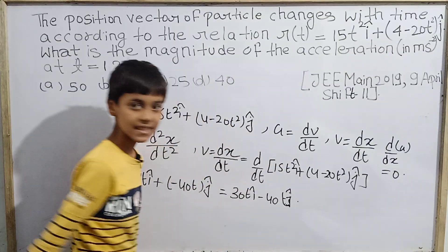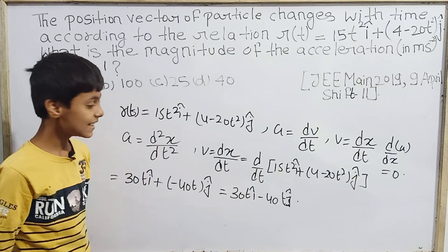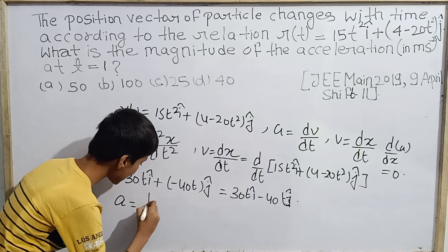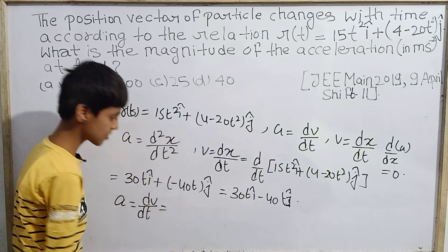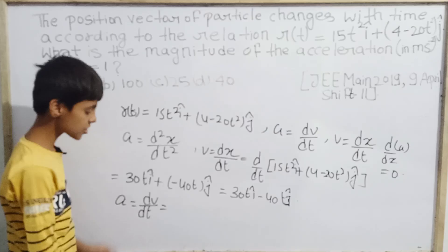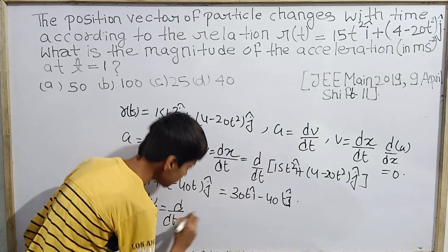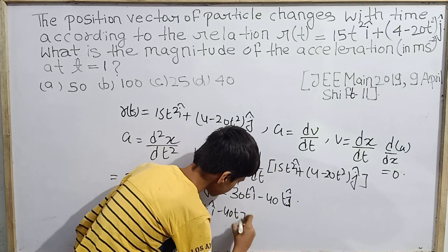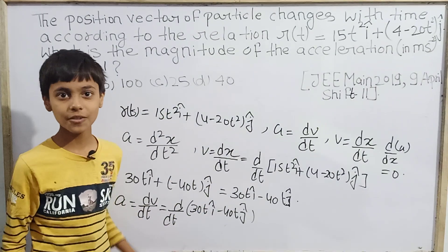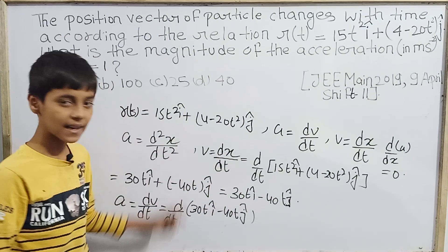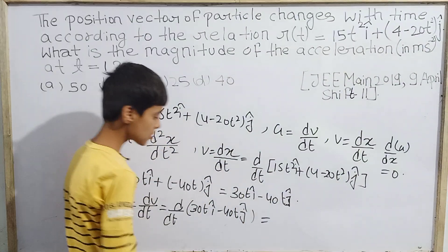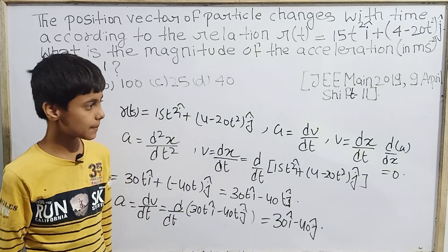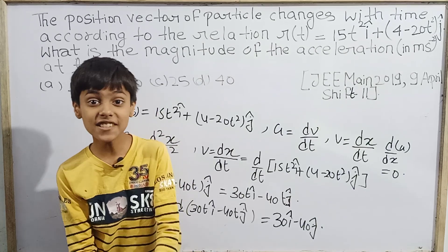Now, to get the acceleration, we differentiate the velocity: a = dv/dt, which is the differentiation of 30t î − 40t ĵ. Differentiating this gives a = 30 î − 40 ĵ. This is the acceleration vector of the particle.